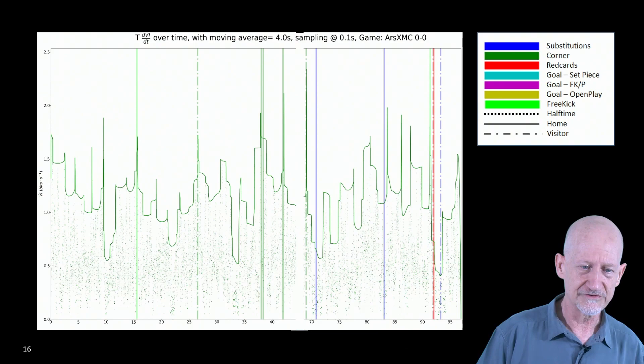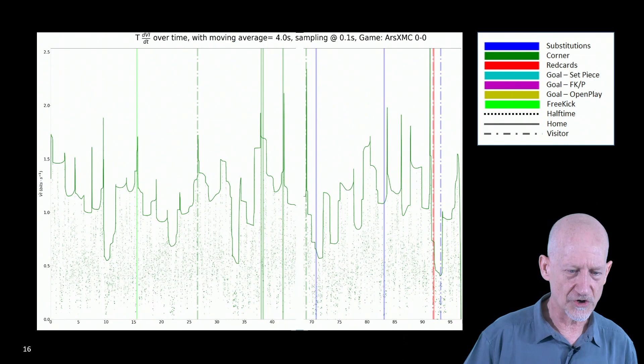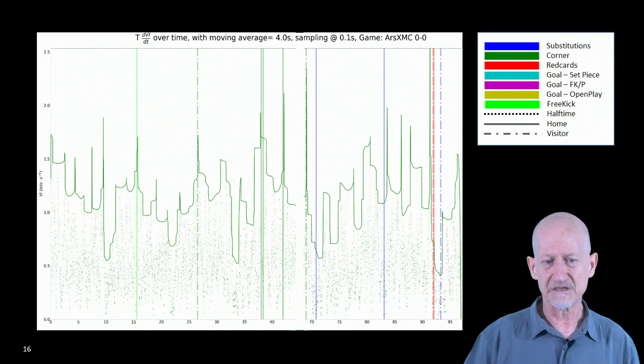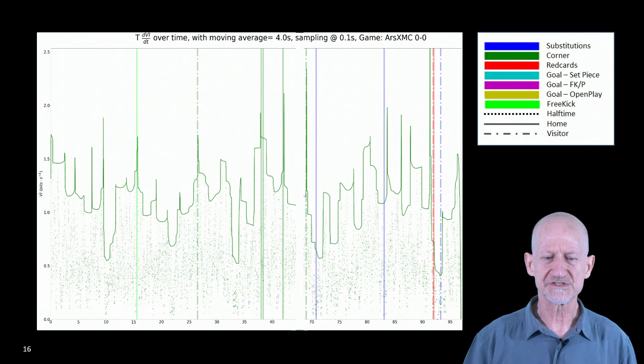We can see, for instance, that at minute 16, there's a spike in the variation of information that corresponds to a free kick. Then there's a whole set of corners at time 27, at 38, that again they generate lots of spikes.